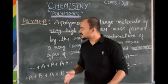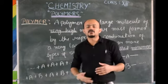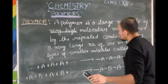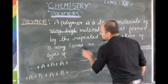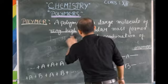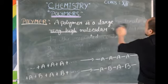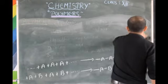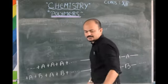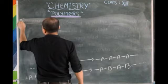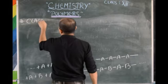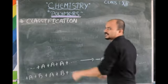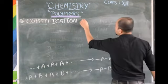Now let's discuss about the classification of polymers. Polymers can be classified based on different criteria; here we will be discussing a few of them. The first one is classification on the basis of repeating units.